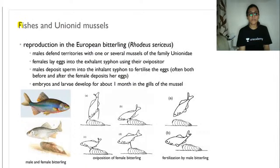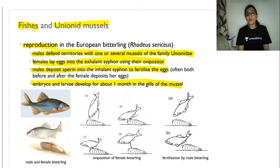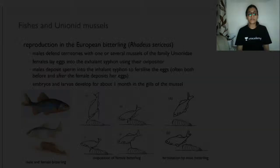Another co-evolution example involves fish and unionid mussels, related to reproduction. Males defend territories containing one or several mussels. Females lay eggs in the exhalant siphon using an ovipositor; males deposit sperm into the inhalant siphon to fertilize the eggs. Embryos and larvae develop for about one month inside the mussel. The male fish takes care of protecting the eggs from predation — this is a very interesting example of co-evolution.